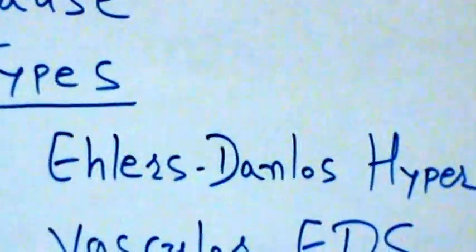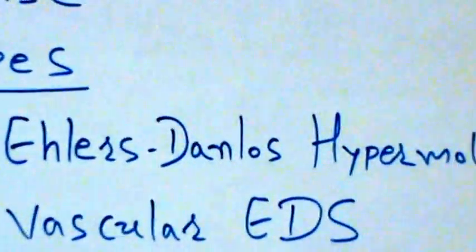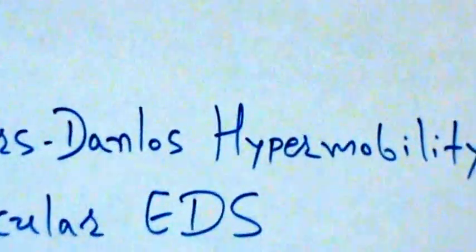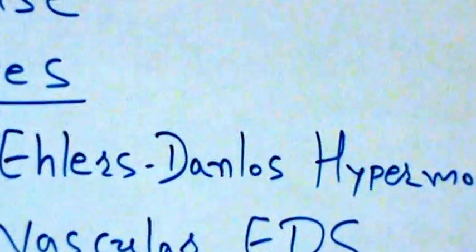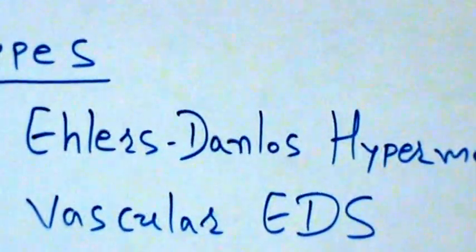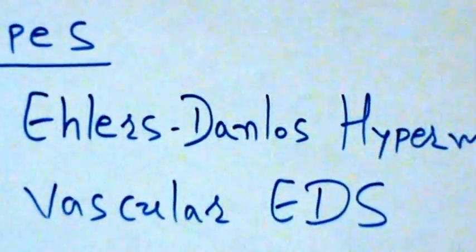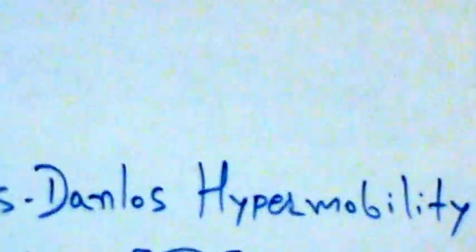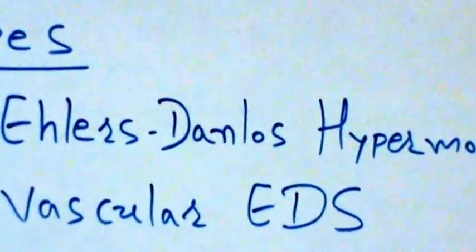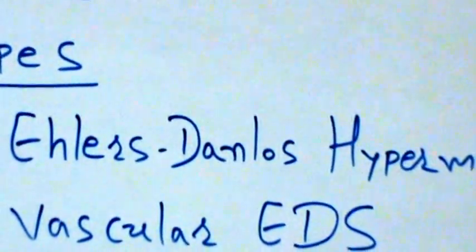The most common form of EDS is Ehlers-Danlos hypermobility type, also known as Ehlers-Danlos syndrome type 3. It is estimated that 1 in 5,000 to 20,000 people have EDS hypermobility type. It is characterized by loose joints and chronic or long-term joint pain. The exact cause of EDS hypermobility type is not known.